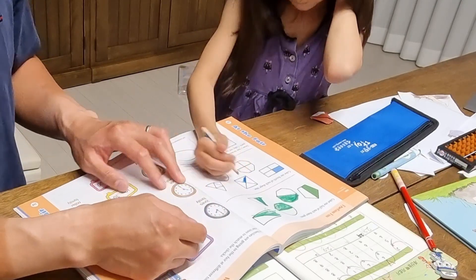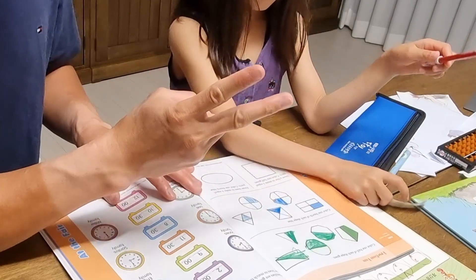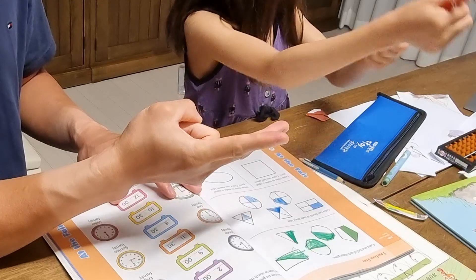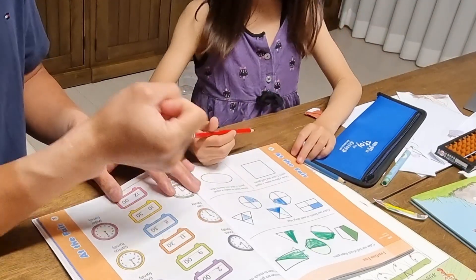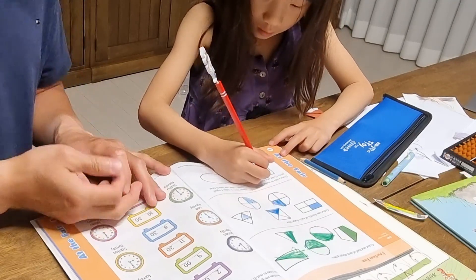It's blue color, yes, okay. Draw a line to make two equal parts. Can you? That's okay, and color one half.